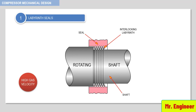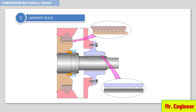In many process applications, you will find arrangements employing both simple and interlocking labyrinth seals. Here you can see the simple labyrinth seal and the interlocking labyrinth seal. Keep in mind, though, that labyrinth seals do not completely prevent leakage. They are widely used as interstage seals, where the pressure differential required across the stage is small enough for the labyrinth seal to be effective.